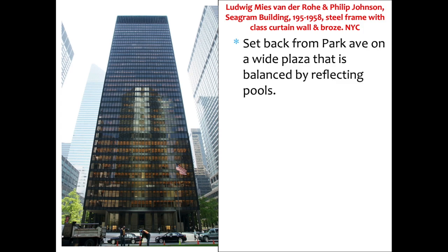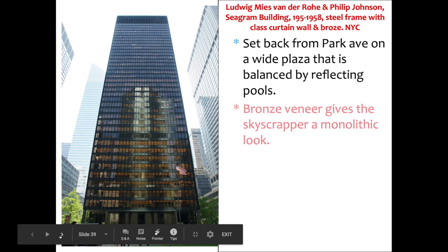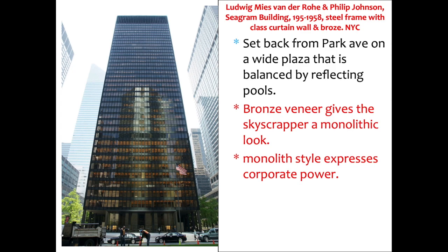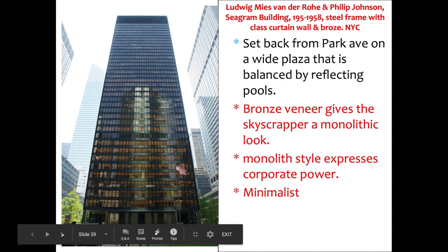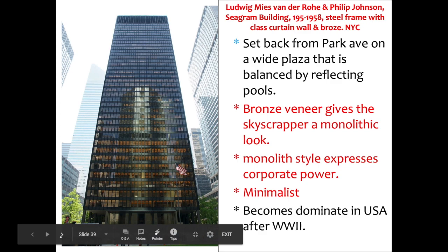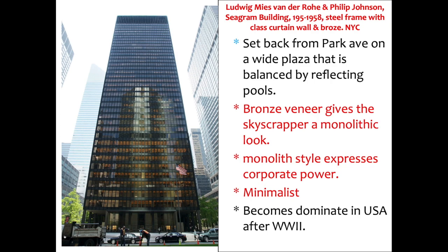The Seagram Building is set on a very wide, large plaza balanced on either side by large reflecting pools. The bronze veneer gives the skyscraper an almost monolithic and imposing look, representing corporate power. It also has minimalist qualities — not very decorative or ornate — and becomes the dominant style of architecture in the United States throughout the 1940s, 50s, and 60s: the International Style.